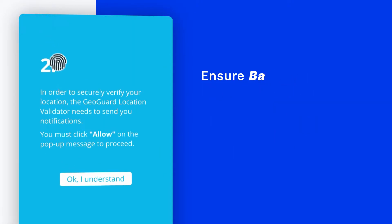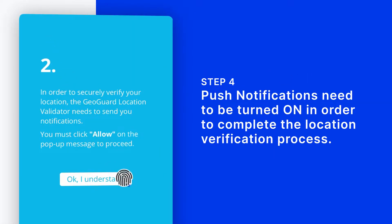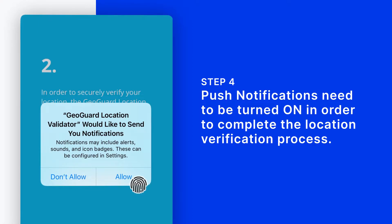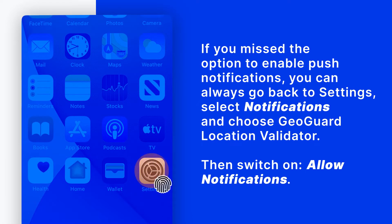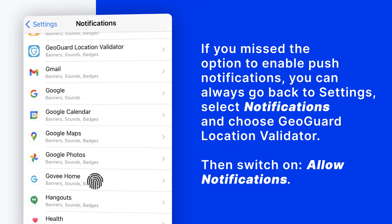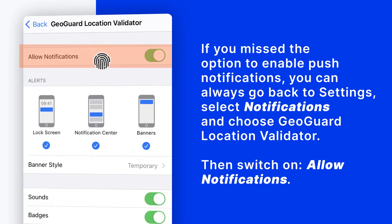Push notifications need to be turned on in order to complete the location verification process. If you missed the option to enable push notifications, you can always go back to Settings, select Notifications, and choose GeoGuard Location Validator, then switch on Allow Notifications.